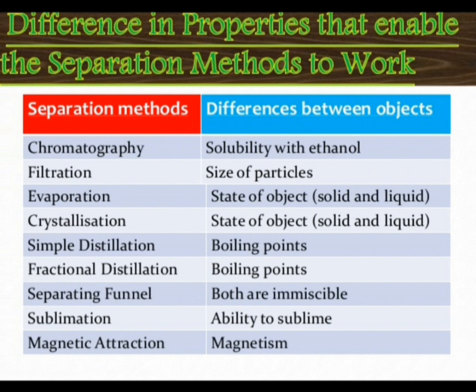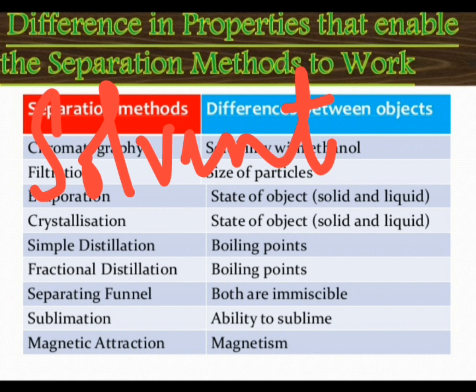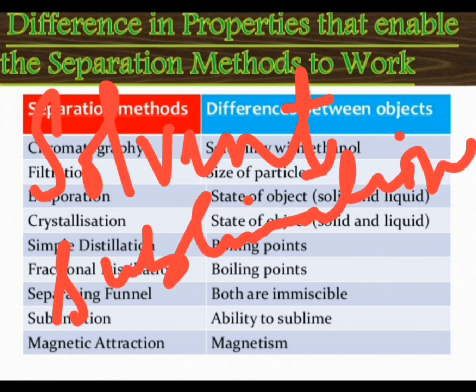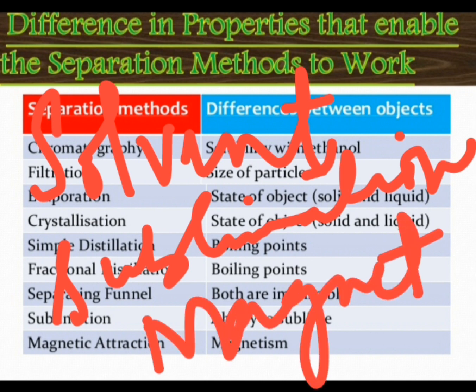Today we will discuss how we can separate a mixture of two solids. All mixtures containing two solid substances can be separated by one of three methods: first, using a suitable solvent; second, the process of sublimation; and third, by using a magnet. We will describe all these methods in detail one by one.